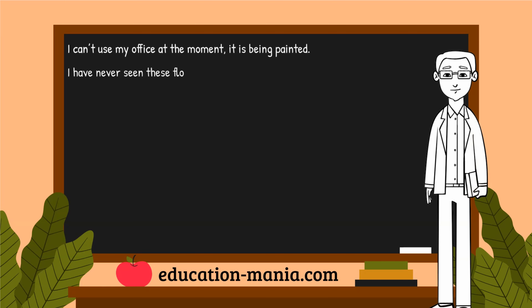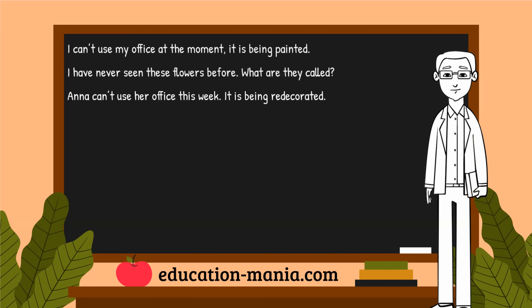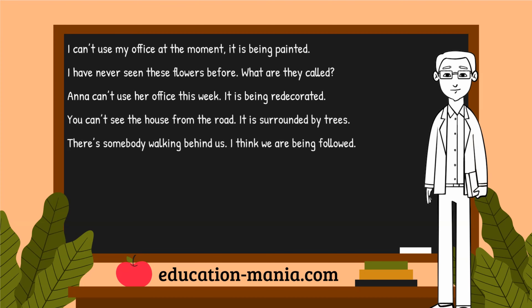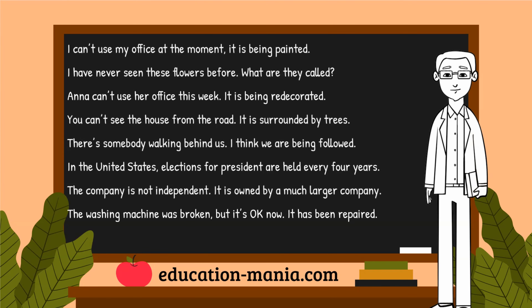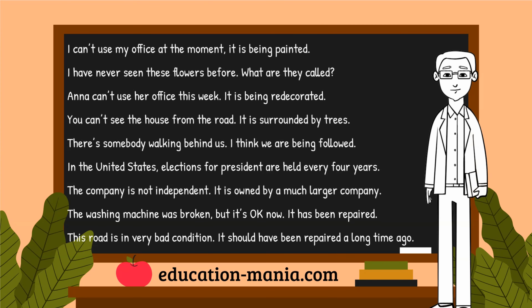'I have never seen these flowers before — what are they called?' 'Anna can't use her office this week — it is being redecorated.' 'You can't see the house from the road — it is surrounded by trees.' 'There's somebody walking behind us — I think we are being followed.' 'In the United States, elections for president are held every four years.' 'The company is not independent — it is owned by a much larger company.' 'The washing machine was broken, but it's okay now — it has been repaired.' 'This road is in very bad condition — it should have been repaired a long time ago.'